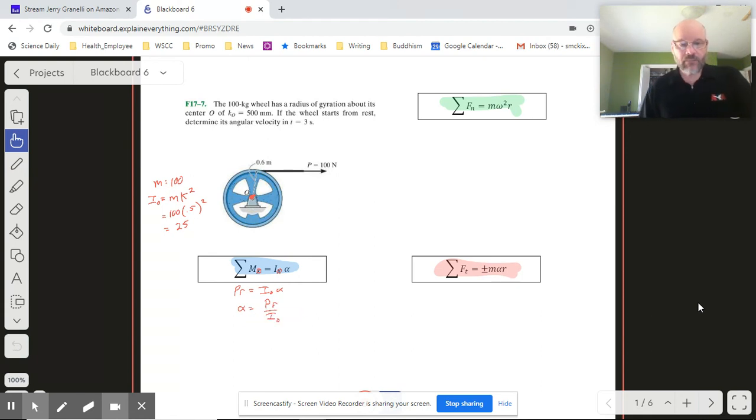We're going to have P times the radius is I_O alpha, or alpha is just going to become P r over I_O. Now my moment is actually negative, so I need to pop that guy in there. We put in our values: 100 times 0.6, and then I_O which we found to be 625. When we do all that, we get a value of negative 2.4.